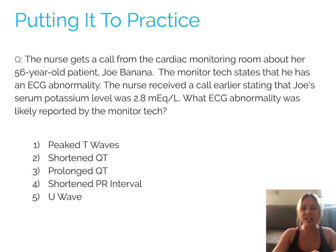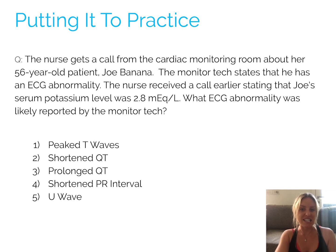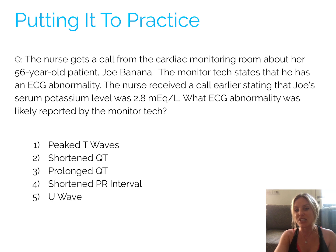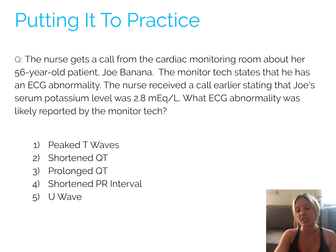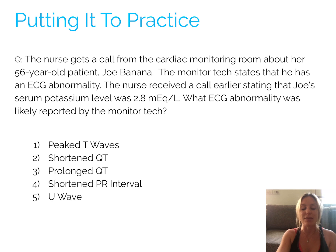The nurse gets a call from the cardiac monitoring room about her 56-year-old patient Joe Banana. The monitor tech states that he has an ECG abnormality. The nurse received a call earlier stating that Joe's serum potassium level was 2.8 mEq/L. What ECG abnormality was likely reported by the monitor tech? Answer options are: peaked T waves, shortened QT, prolonged QT, shortened PR interval, and U wave. Let's jump into our hypokalemia Picmonic to answer this.